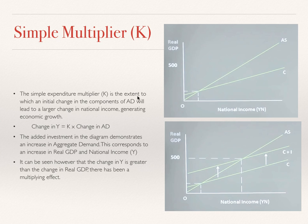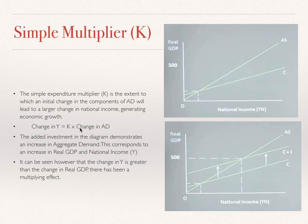The simple multiplier itself is the extent to which an initial change in the components of AD will lead to a larger change in national income, generating economic growth. The change in Y — national income, sometimes written NY — is equal to K, our multiplier, times the change in aggregate demand. We need to know this equation because the simple multiplier often comes up as a multiple choice equation in the HSE. We also need to understand it to look at how policies can actually improve economic growth.